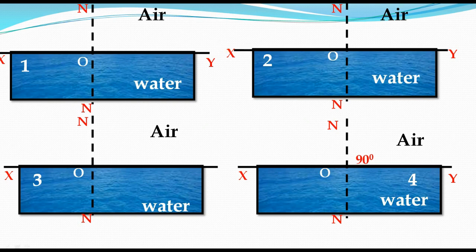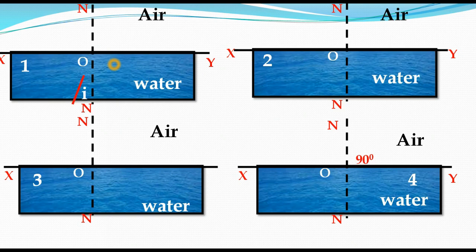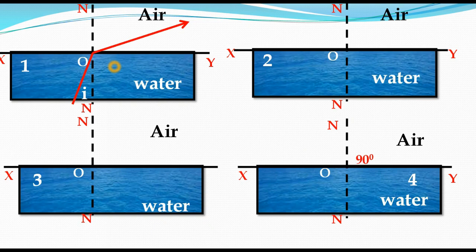Look at Figure 1. There is water — a denser medium — and above it, air — a rarer medium. XY is the separation between them, called the interface. NN is the normal, and O is the point of incidence. One ray is travelling through the water, the denser medium, incident on the interface at O. It is bending away from the normal because this light ray is travelling from denser to rarer medium — that is called refraction. Here the angle of incidence is I and there is some angle of refraction.